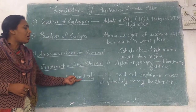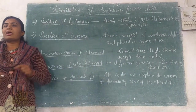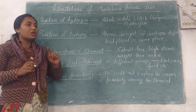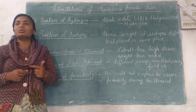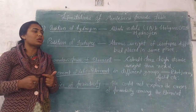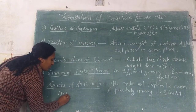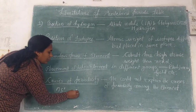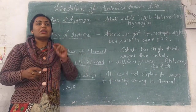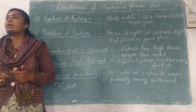The last limitation is the cause of periodicity. Periodicity means that after a regular interval, the electronic configuration of elements repeats. For example, electronic configurations like ns1 and ns2 repeat after a regular interval of time.